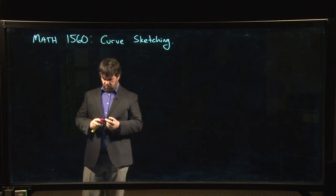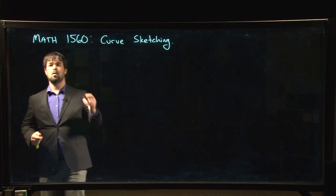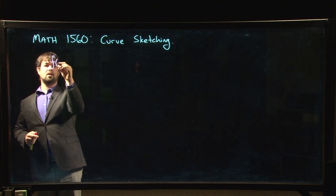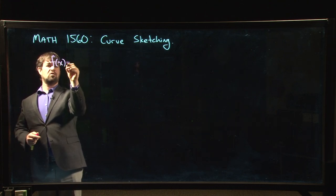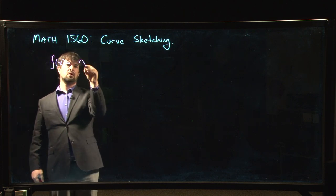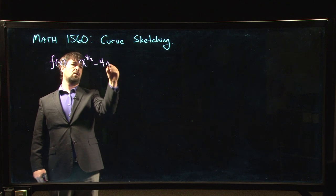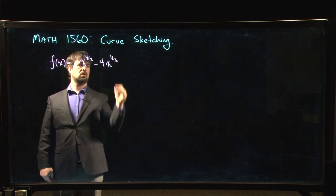All right, so we're going to do one more example with curve sketching. This is going to be one with fractional powers which some people find a little bit tricky. So the function we're going to do is x to the 4 over 3 minus 4x to the 1 over 3.